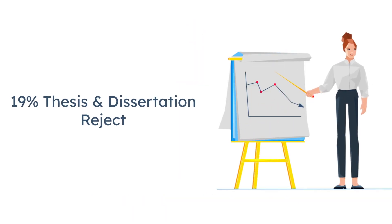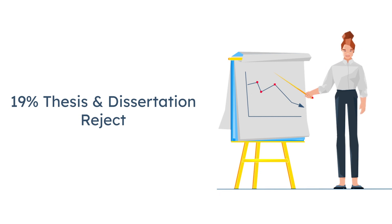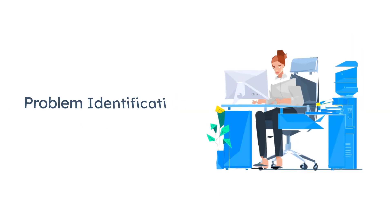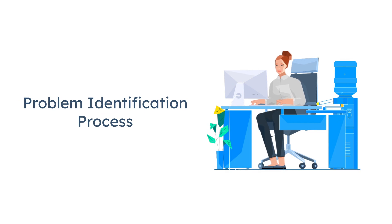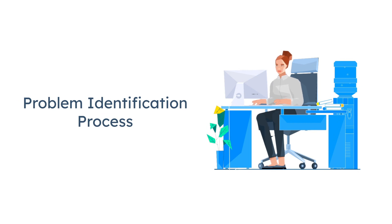19% of theses and dissertations are rejected in external review because they are not working on a novel topic. A novel research topic must be based on an existing problem that is highlighted with the help of a problem identification process.